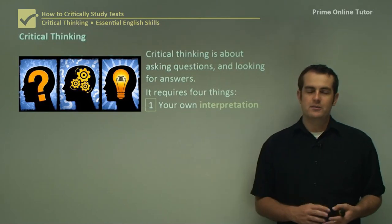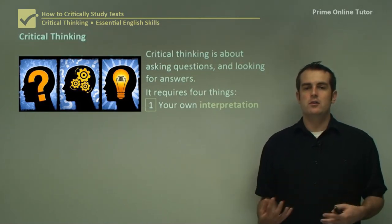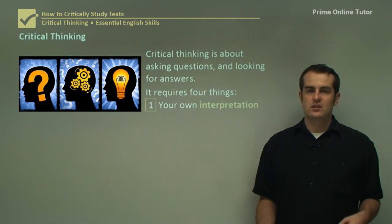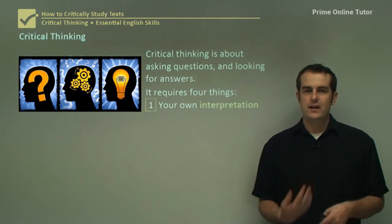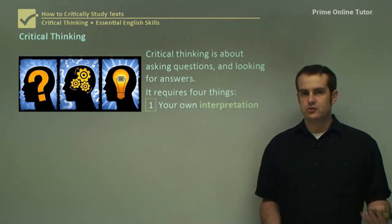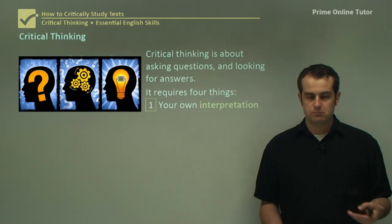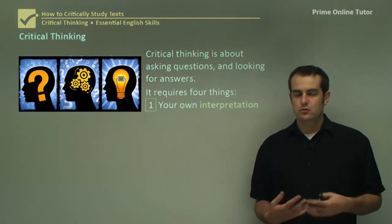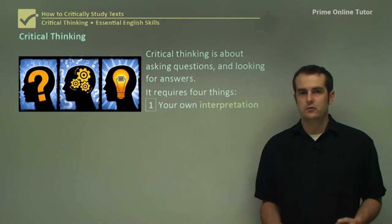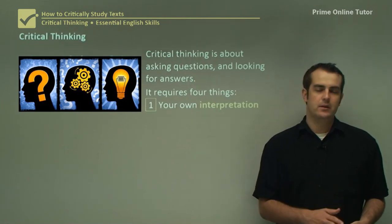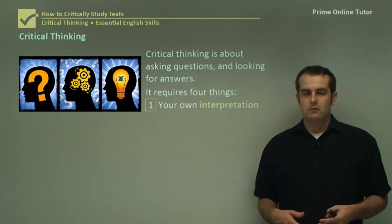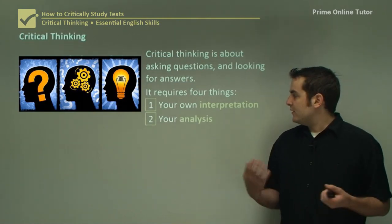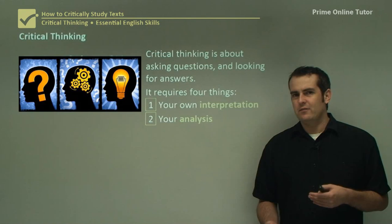It requires basically four processes. First of all, it requires your own interpretation — your own ability to ask yourself questions and be able to answer them yourself, without necessarily having an English exam to prompt you. Ask yourself: what does this mean? How does that relate? What do I feel? What do I think about this? It requires you to analyze it — work out why you think that way.